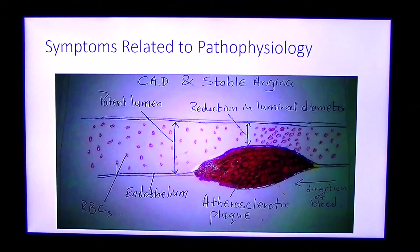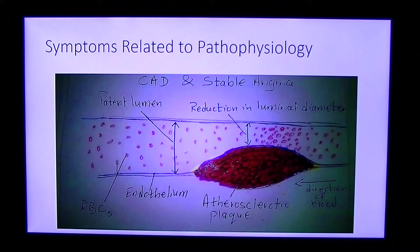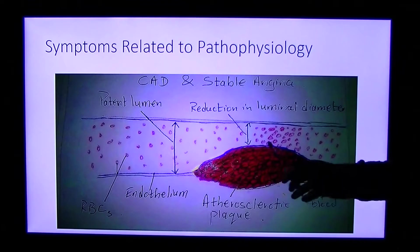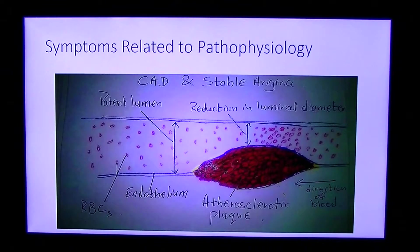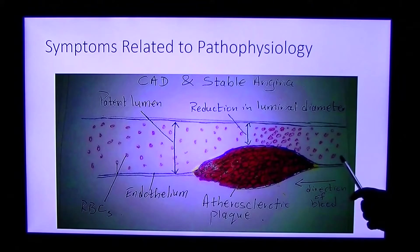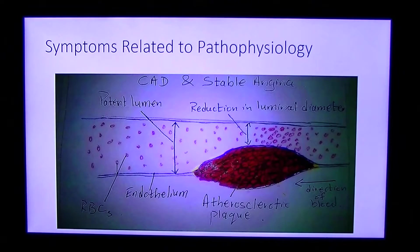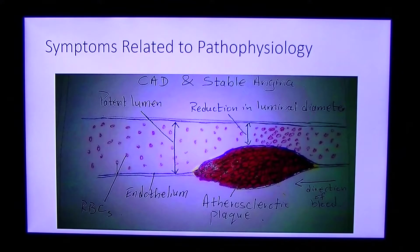In stable angina, the clotted arteries are still providing the heart muscles with oxygen at rest. However, the problem arises when your heart rate increases, such as when exercising — you feel a strangling chest pain called angina pectoris. When you reduce exertion, such as when resting, the chest pain goes away.